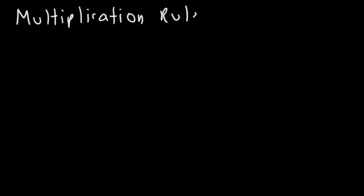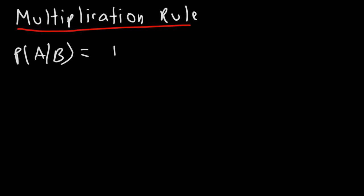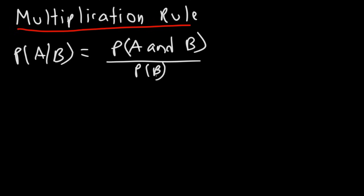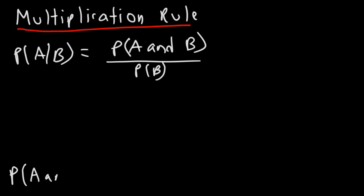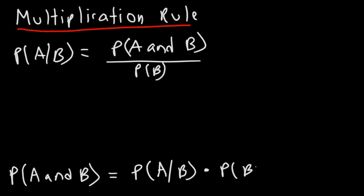The next type of rule is the multiplication rule. First, let's talk about conditional probability. The probability of A given B is the probability of getting A and B divided by the probability of getting B. If we multiply both sides by P(B), we get: the probability of getting A and B is the product of the probability of A given B times the probability of event B occurring.